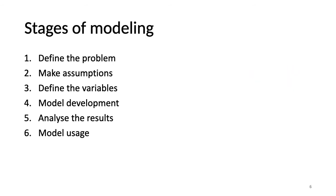I have divided the stages of modeling into six steps: define the problem, make assumptions, define the variables, model development, analyze the results, and model usage. So we will go through each and every step of them with an example system of interest.